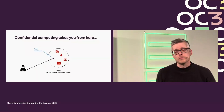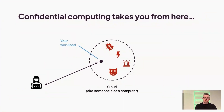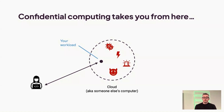Let's start with the problem. If you're running a workload on third-party infrastructure, like the cloud, then you need to consider threats like malicious admins, malicious disgruntled employees, or hackers controlling the infrastructure, or maybe even foreign governments, or co-tenants that accidentally or maliciously get access to your data. That's a concern for some workloads — which is why things like private cloud and on-prem deployments are still very popular.